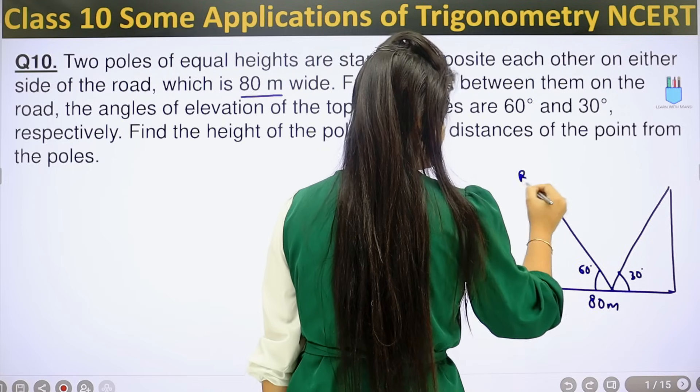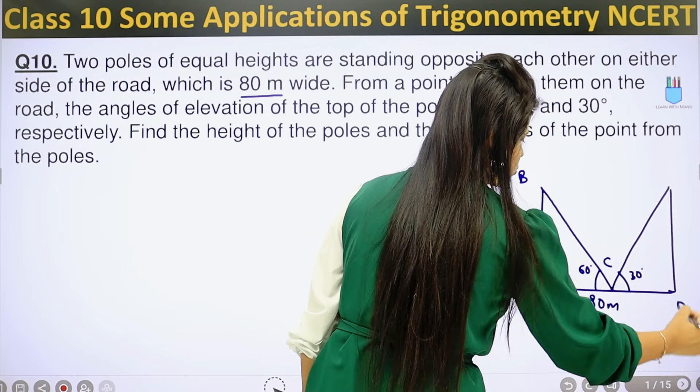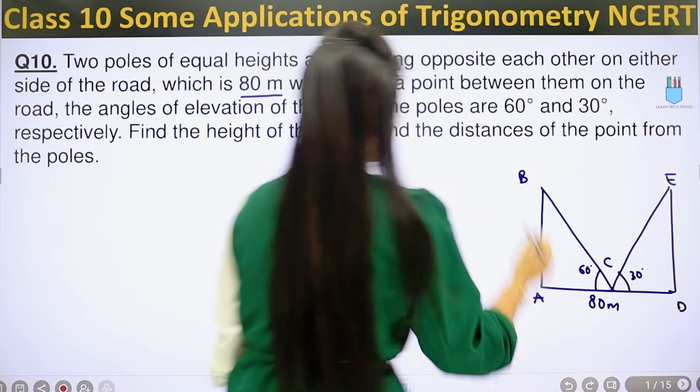Let's mark the clear figure. This is point A, B. Let's call this point C. Let's call this D and E.